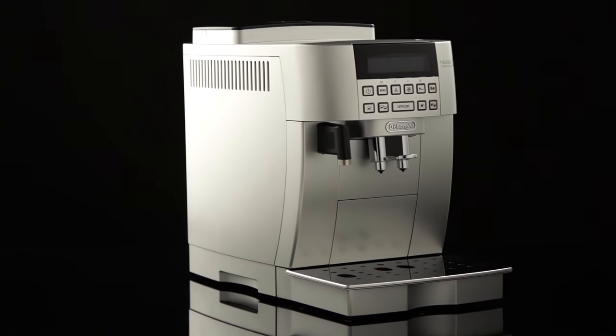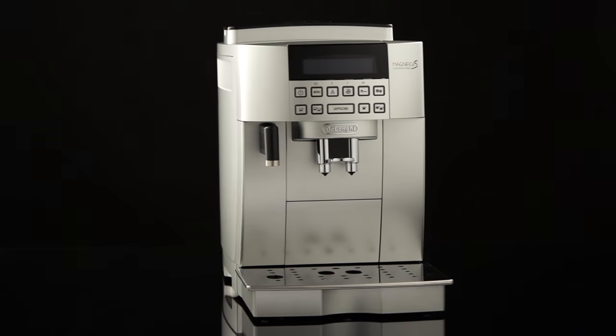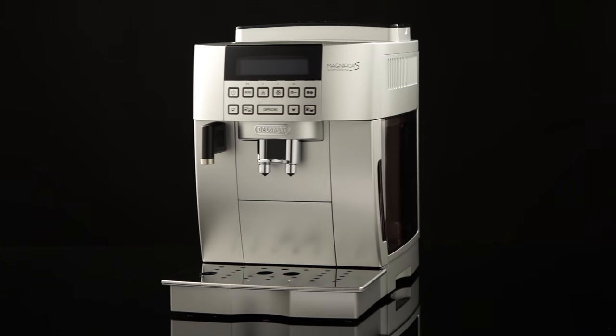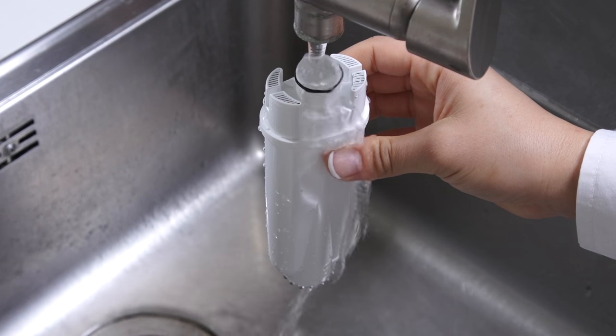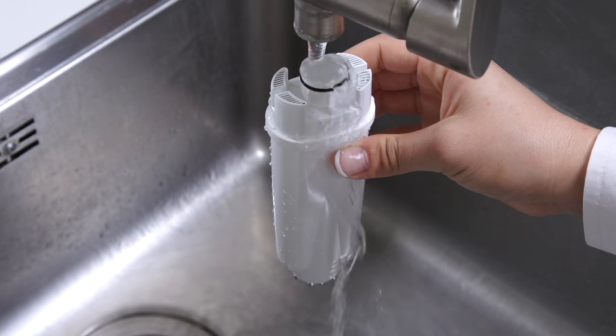To activate the filter, run tap water through the hole in the filter until water comes out of the openings at the side for more than a minute.